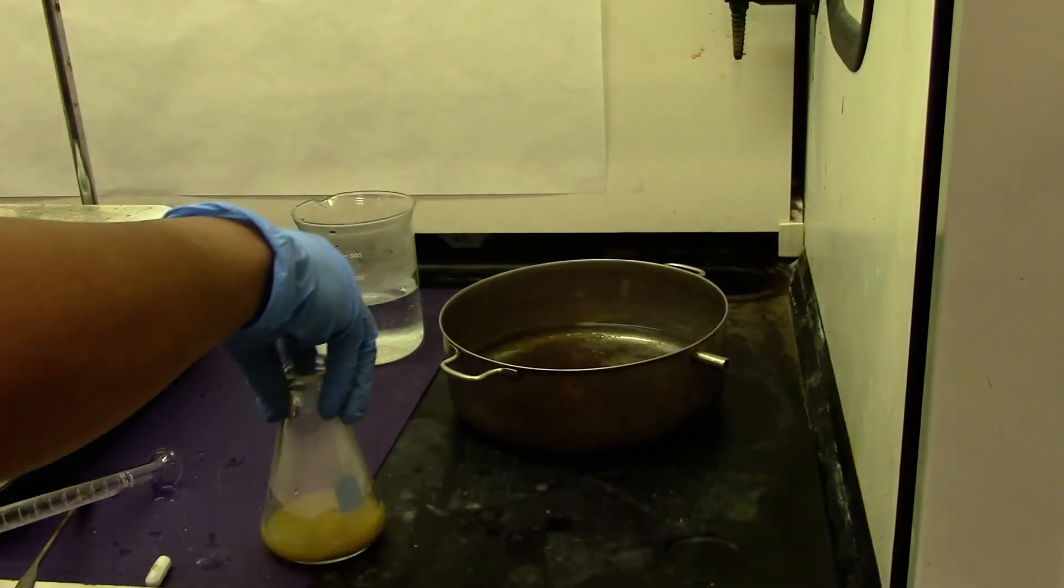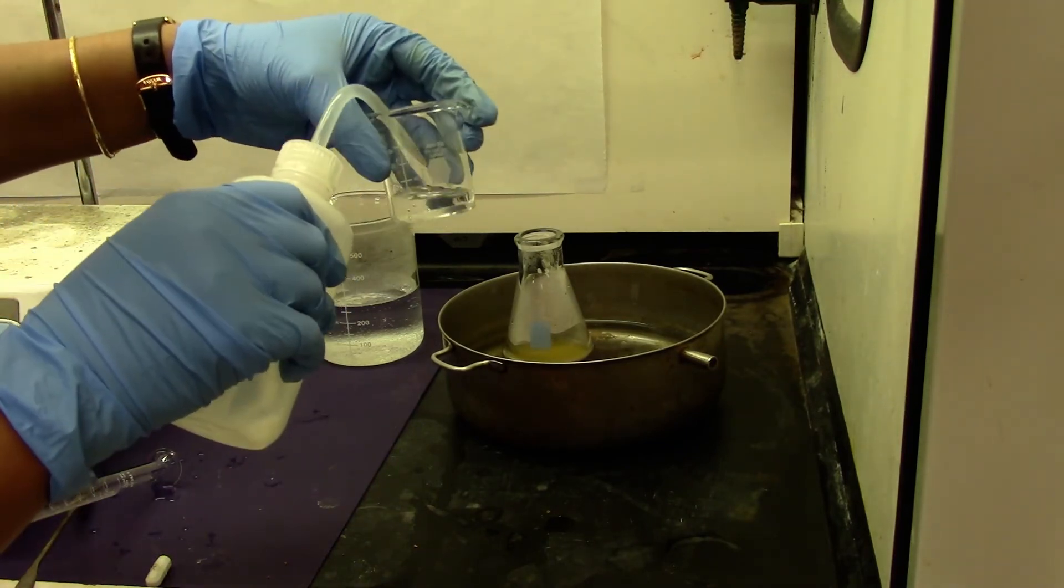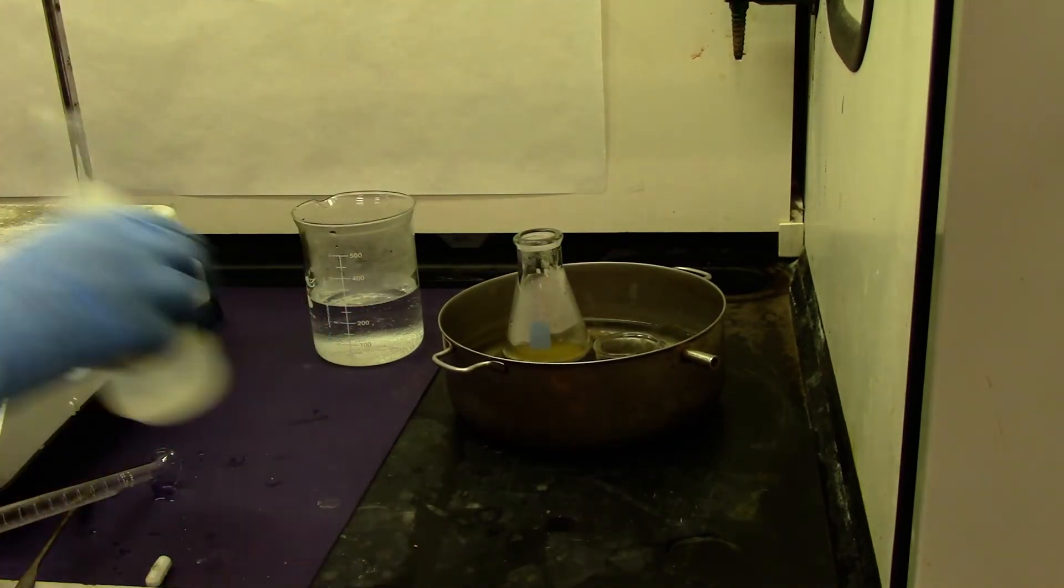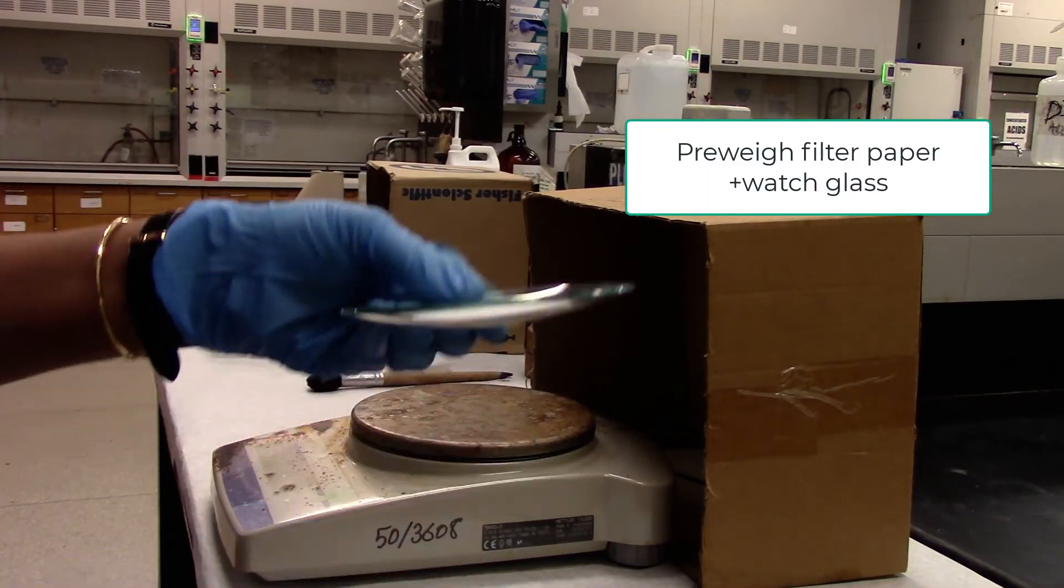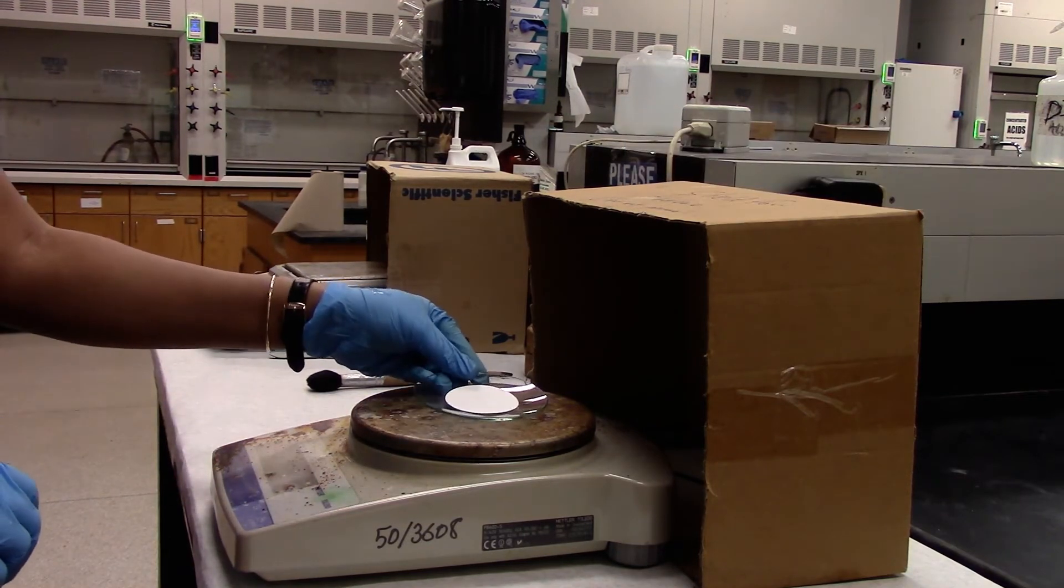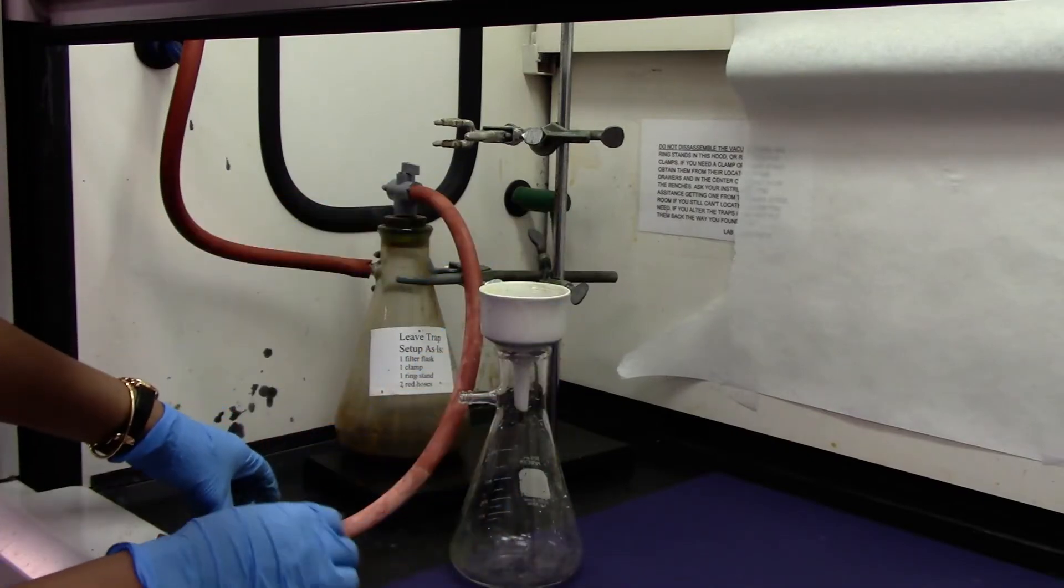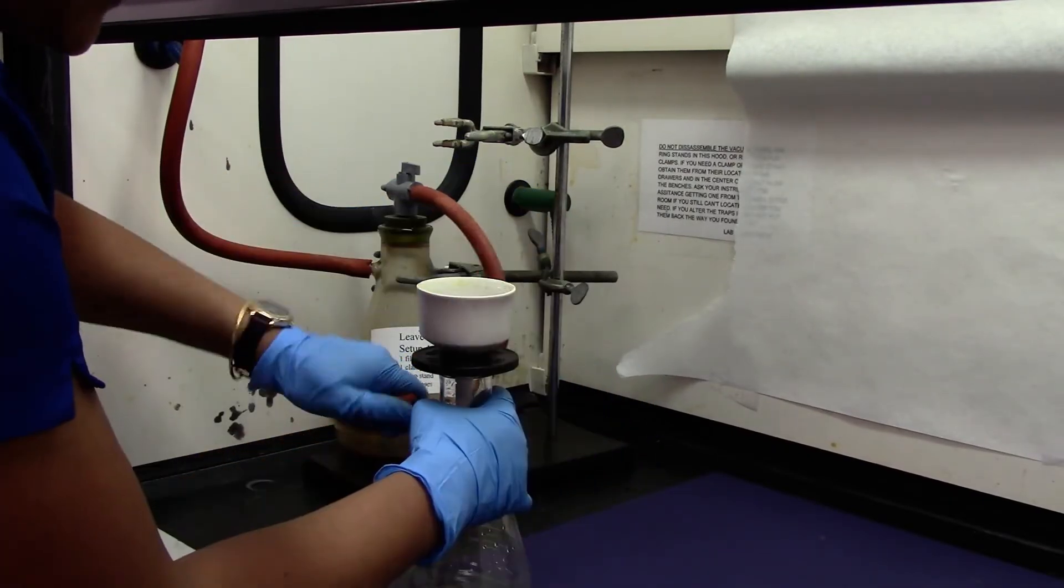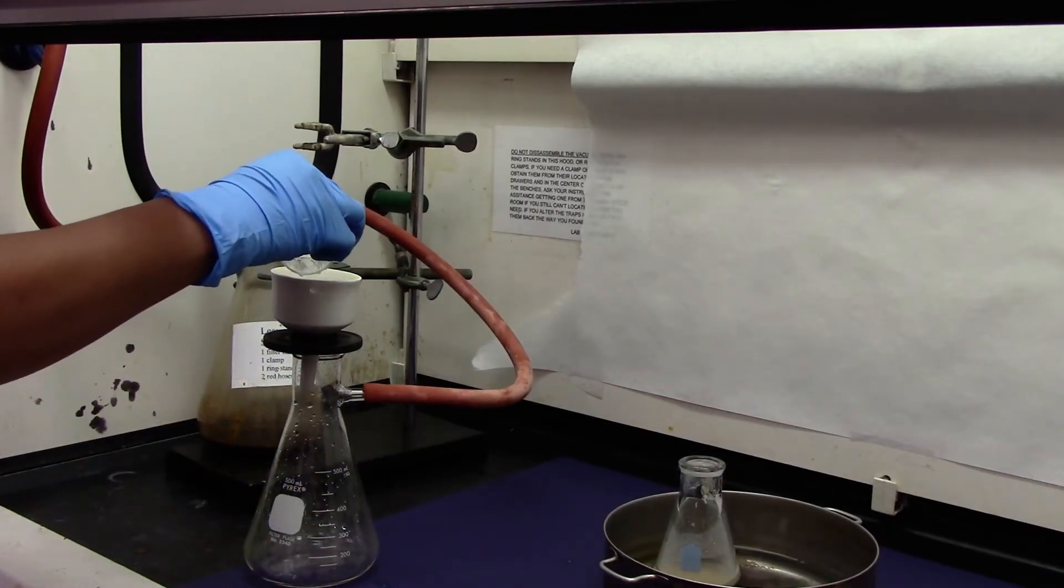I placed this flask with the crystals forming in the ice water. And I am also placing some DI water to cool down for the final filtration. Before the final filtration make sure you weigh the filter paper with the watch glass. Tare the balance and record the mass. Place the filter paper and connect it to the vacuum. Wet the filter paper with some cold DI water.